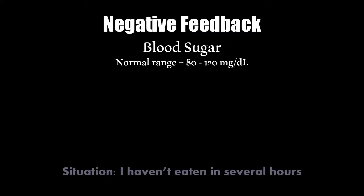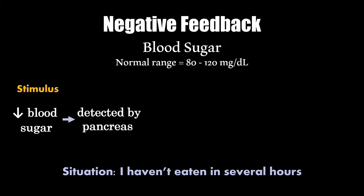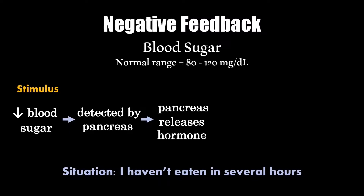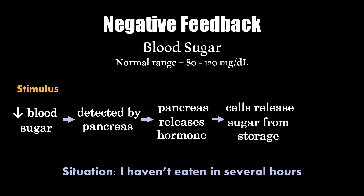If I haven't eaten in a few hours, my blood sugar might start to drop below that set point — that is going to be the initial stimulus. Luckily, my pancreas is able to detect this change in blood sugar and it releases a hormone, which is just a chemical message that can spread throughout your blood.